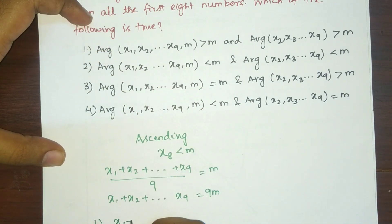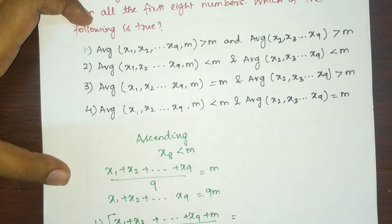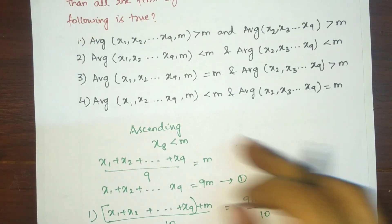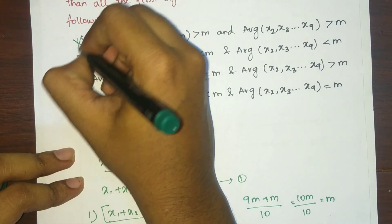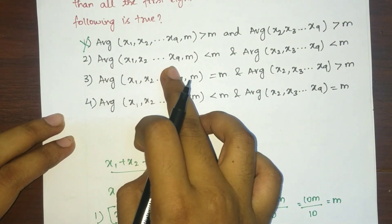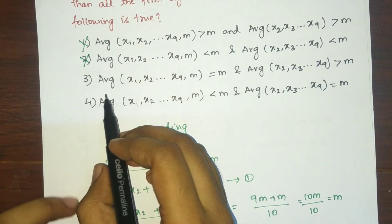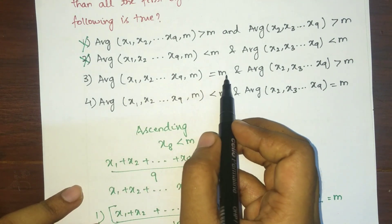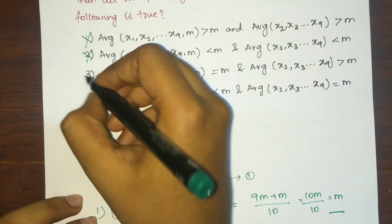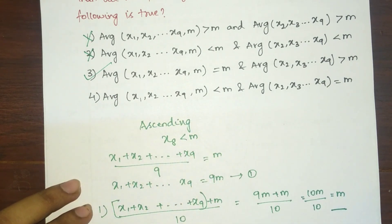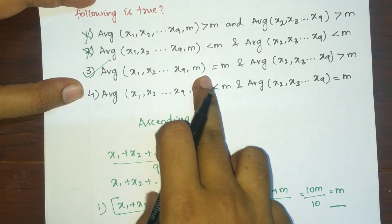Checking option one — average of x1 through x9 along with m, divided by 10: that equals (9m + m) / 10 = 10m / 10 = m. But option one claims it is greater than m, so option one is incorrect. Option two claims it is less than m — also incorrect, since we got exactly m. Option three states the average equals m — that is correct. Option four claims it is less than m — incorrect. Therefore, option three is the right answer.